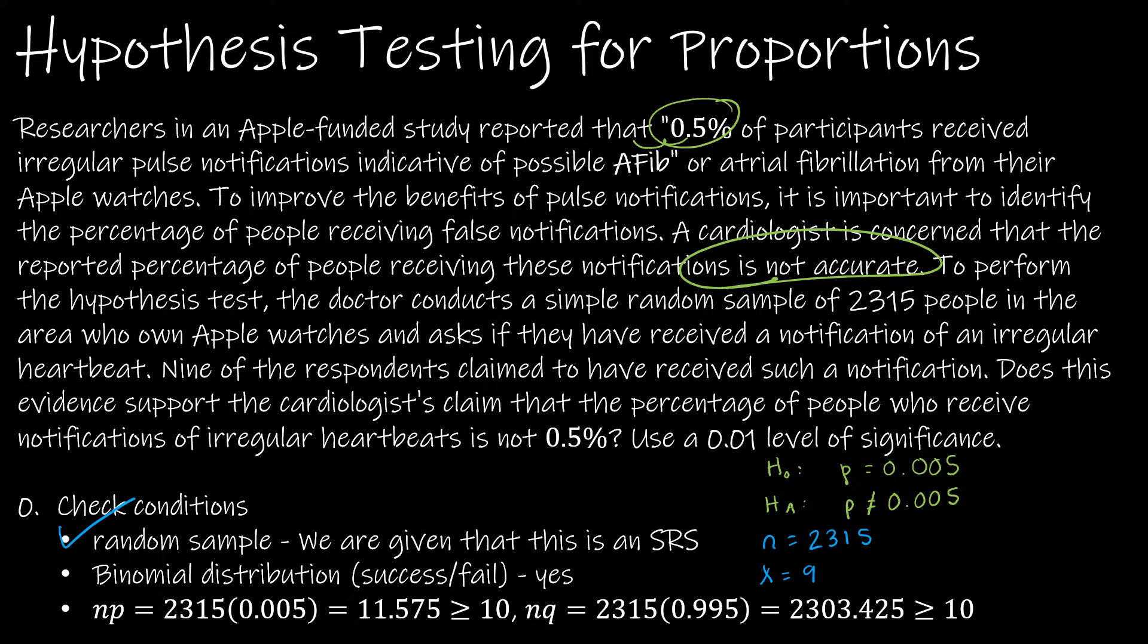Does this evidence support the cardiologist's claim that the percentage of people who receive notifications is not 0.5%? Use alpha of 0.01. So the only thing we're missing here is P-hat, which we will compute on the next page, which will be 9 divided by 2,315.